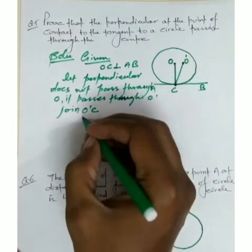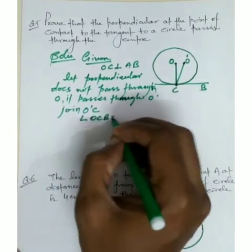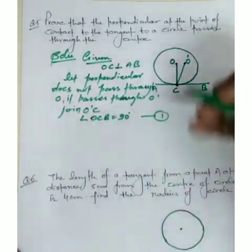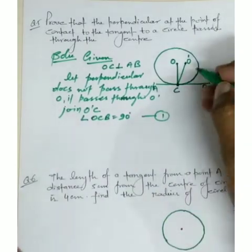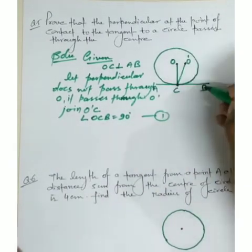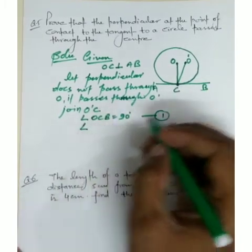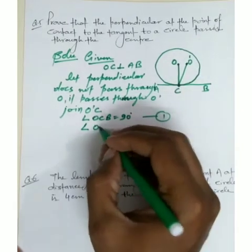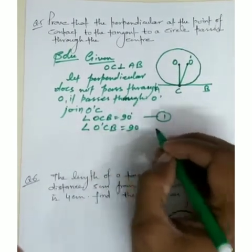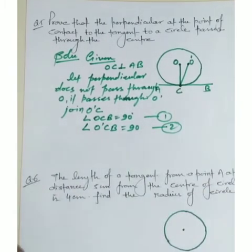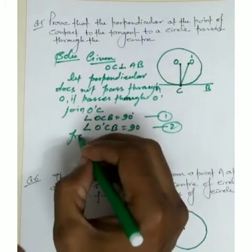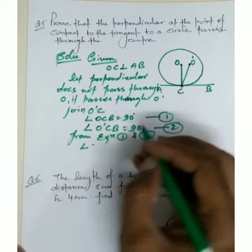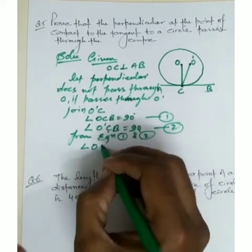Since the radius is perpendicular to the tangent, we can say angle OCB equals 90 degrees — this is equation 1. This is given to us. Since O is the center, and when O dash is perpendicular on tangent AB, we can say angle O dash CB will also be 90 degrees — this is equation 2. From equations 1 and 2...